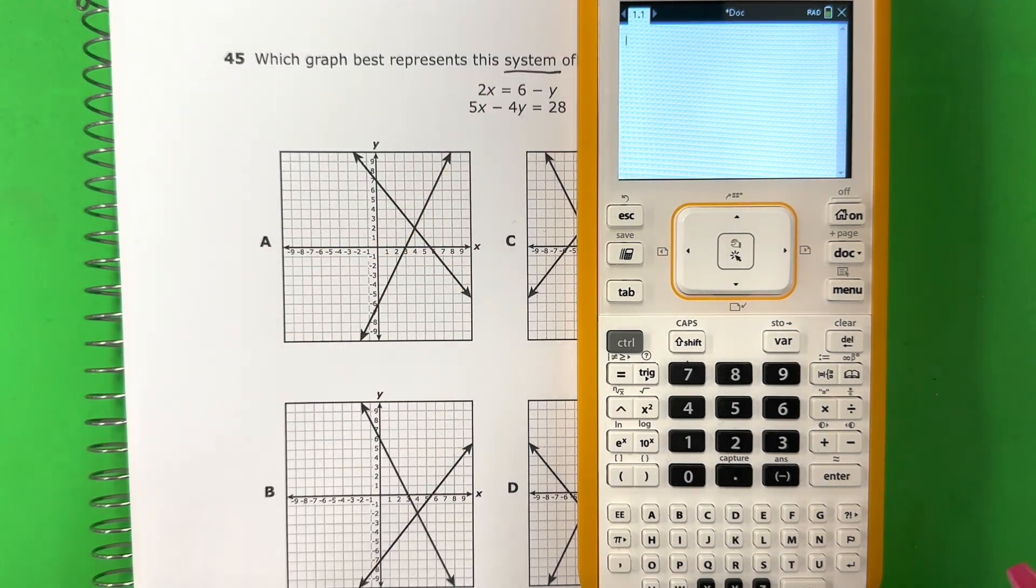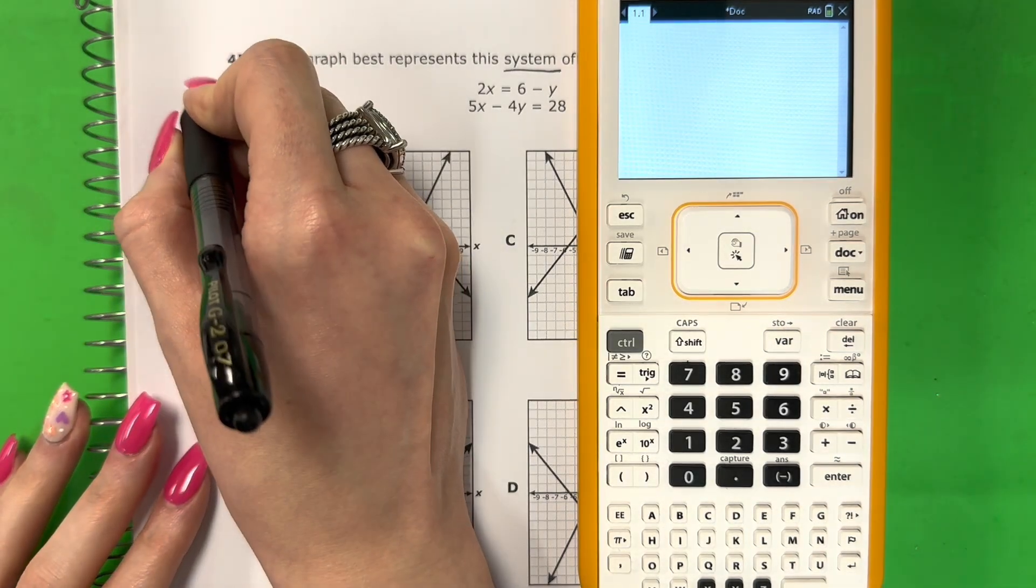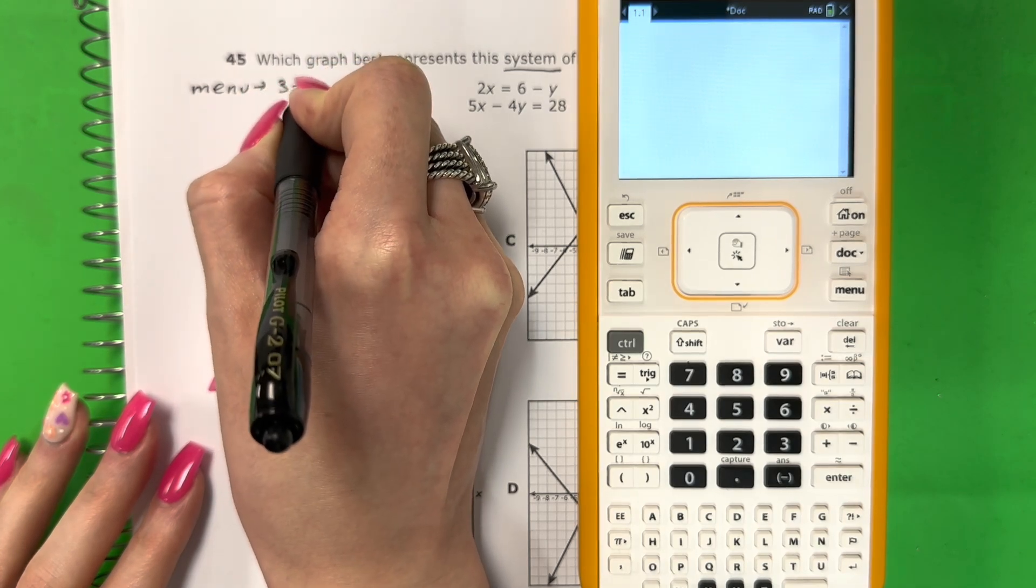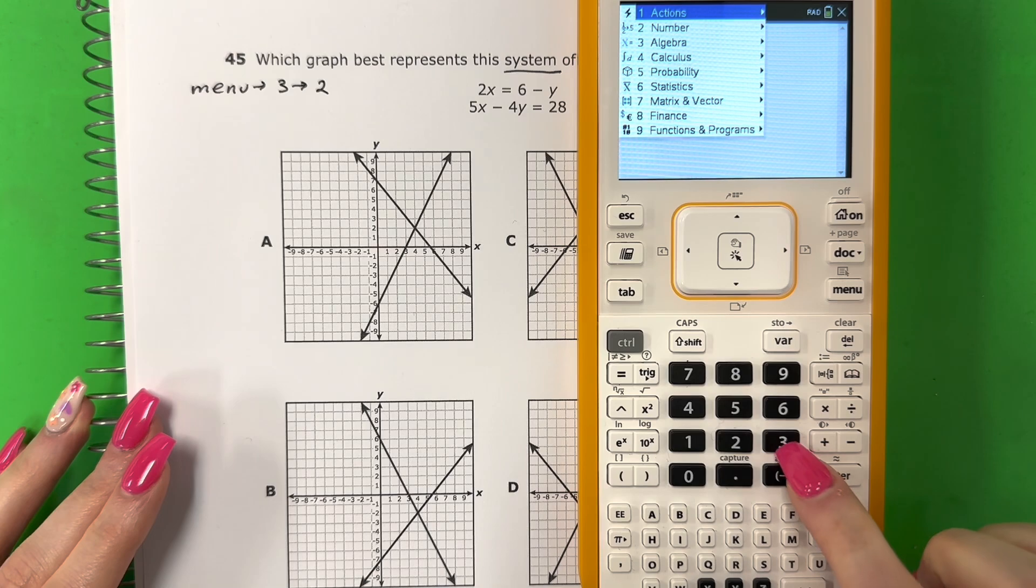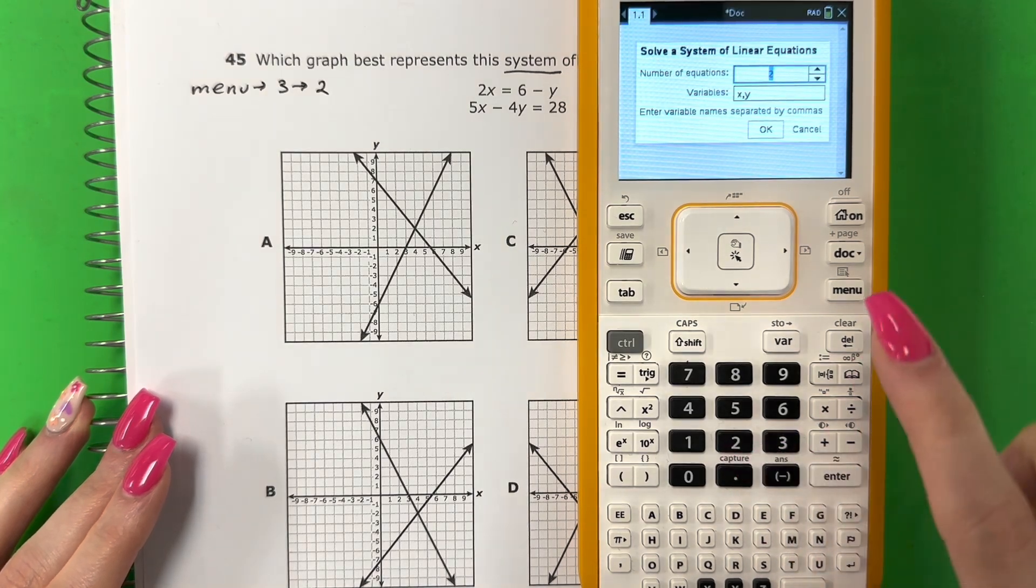So to do the system, para hacer la sistema, the buttons are, los botones son, menu, three, two. Menu, tres, dos. So menu, three, two.